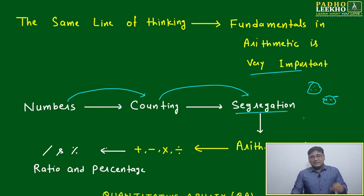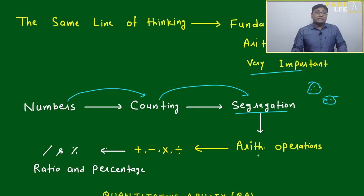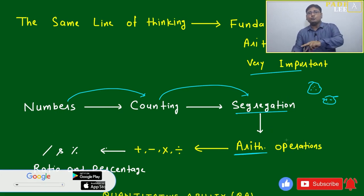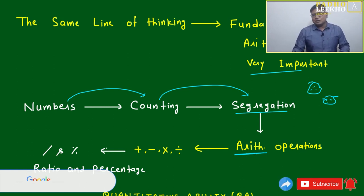Once segregation has started - segregation of similar things, dissimilar things, or whatever - then if you want to change the groupism from one group to another, or if you want to mix something, then what will be needed? Some operation will be needed, and all these operations are called arithmetic operations.